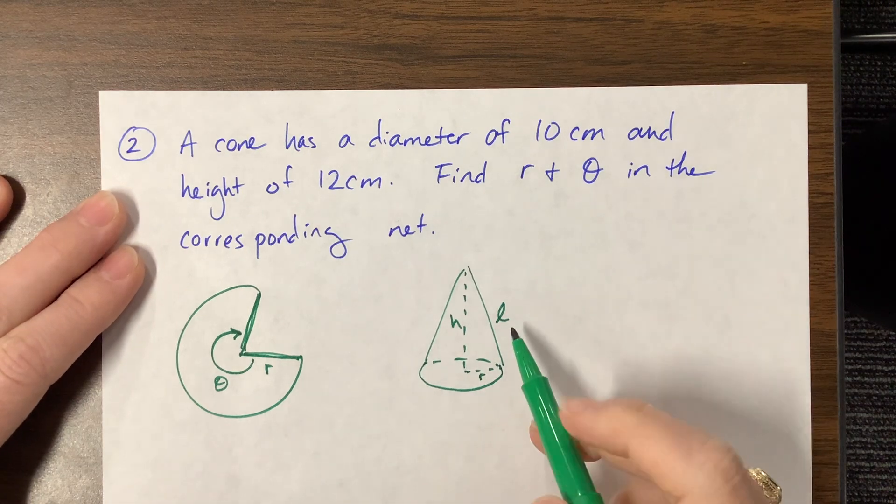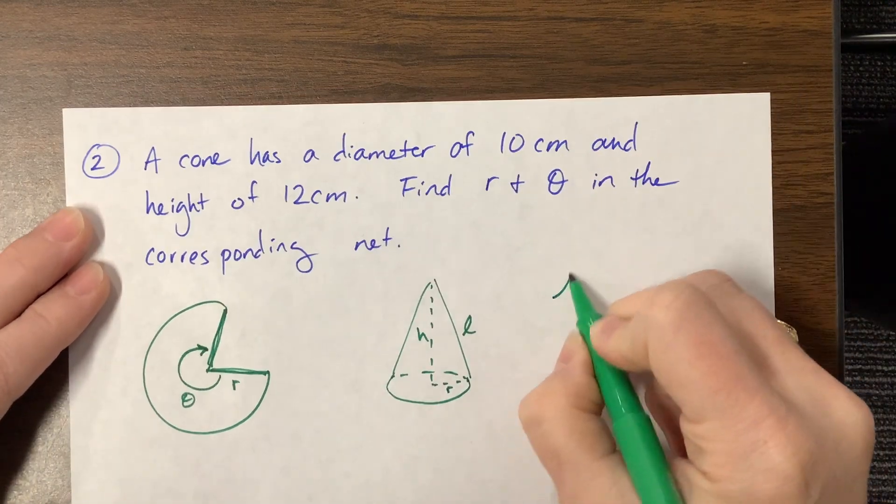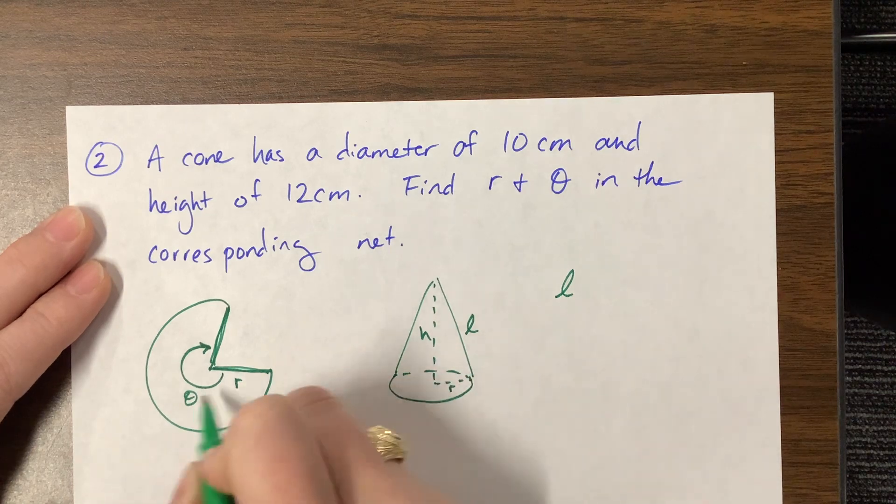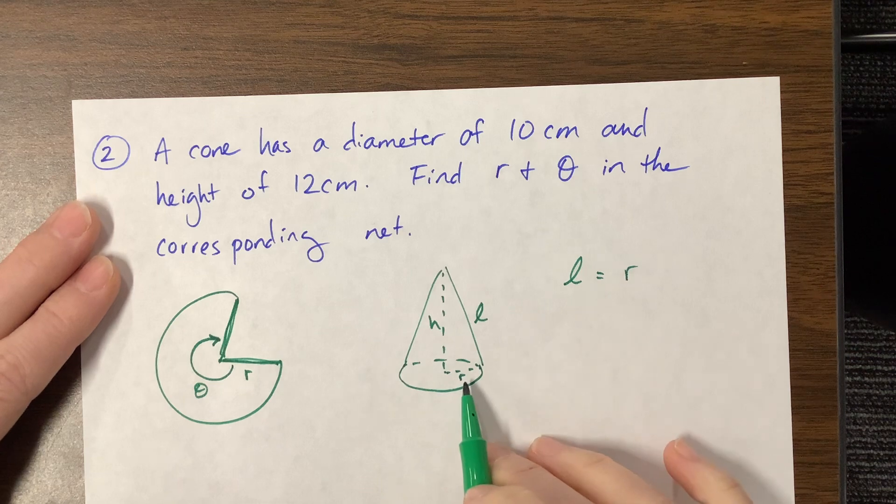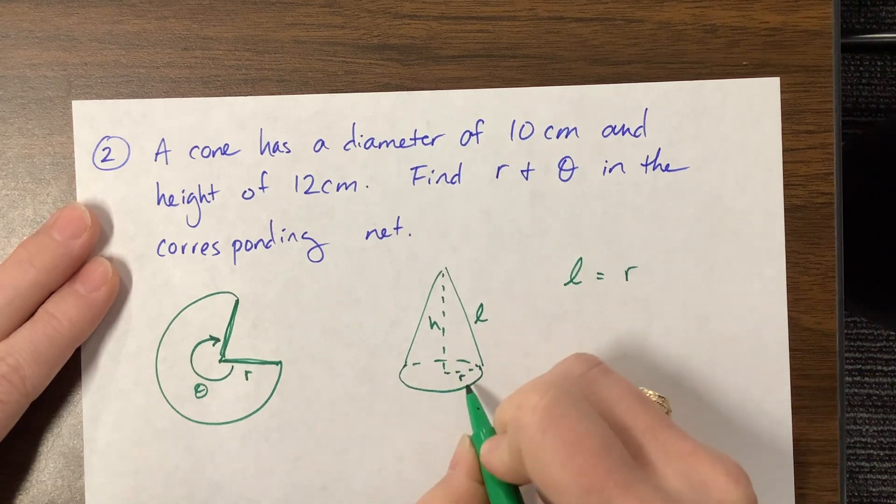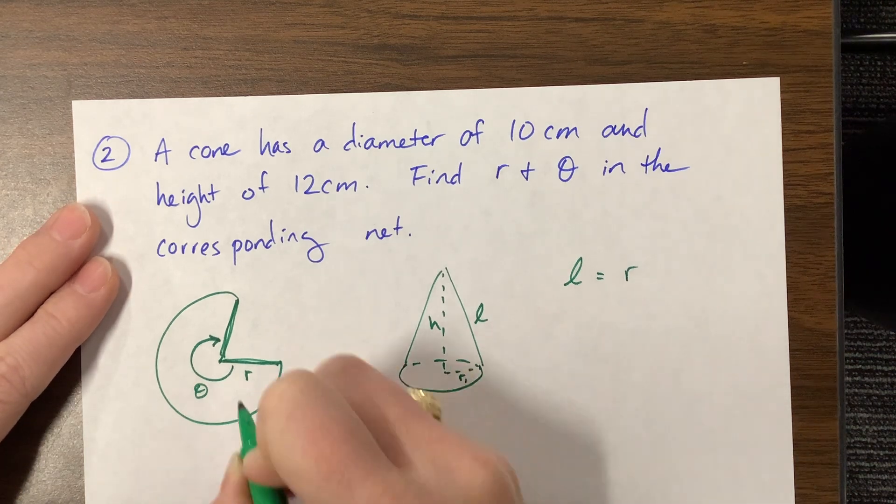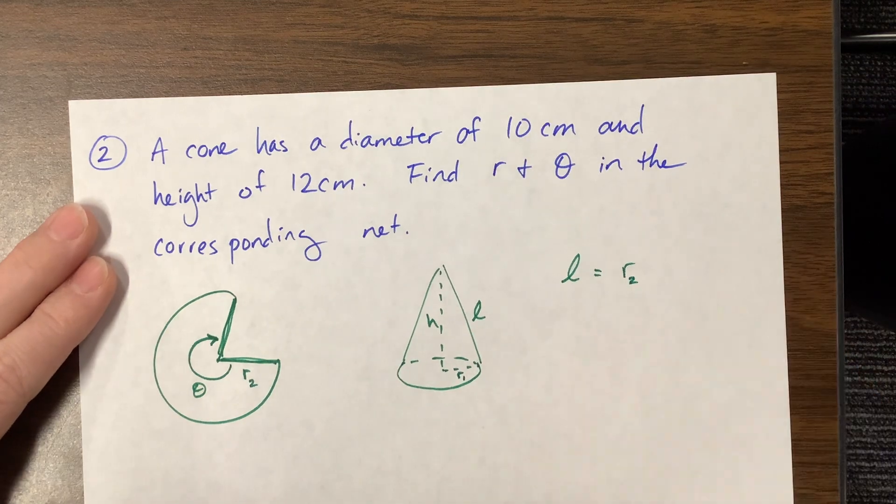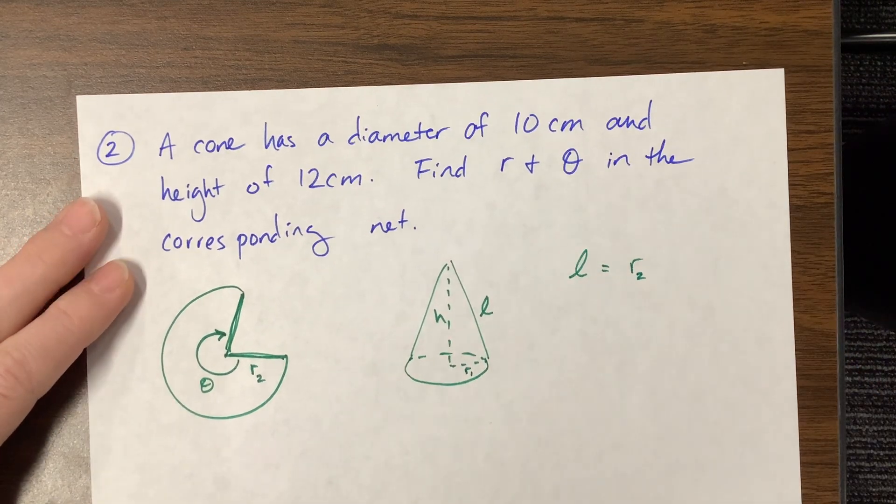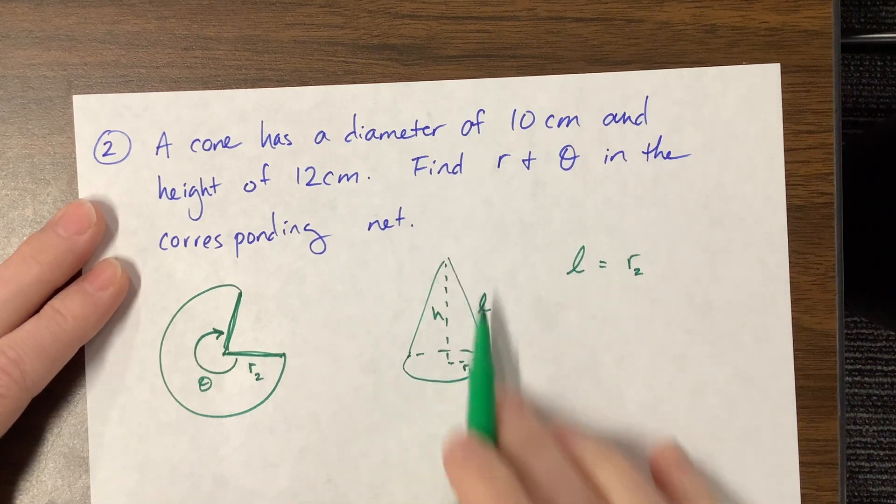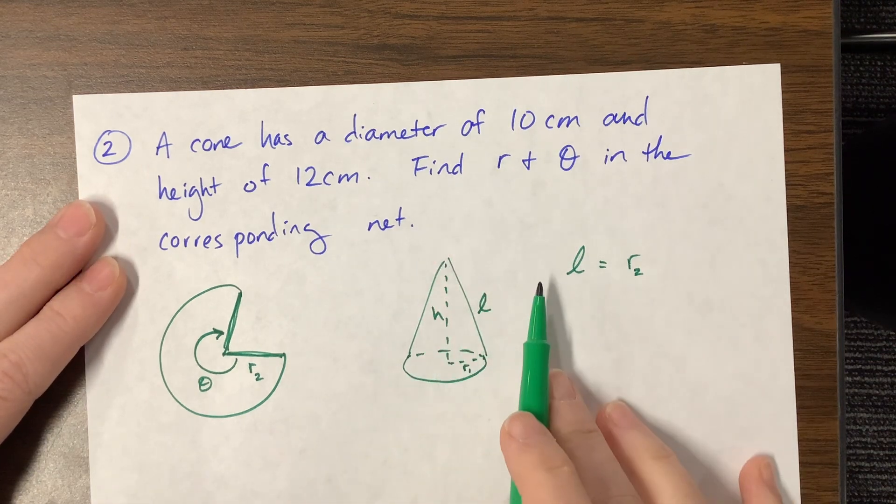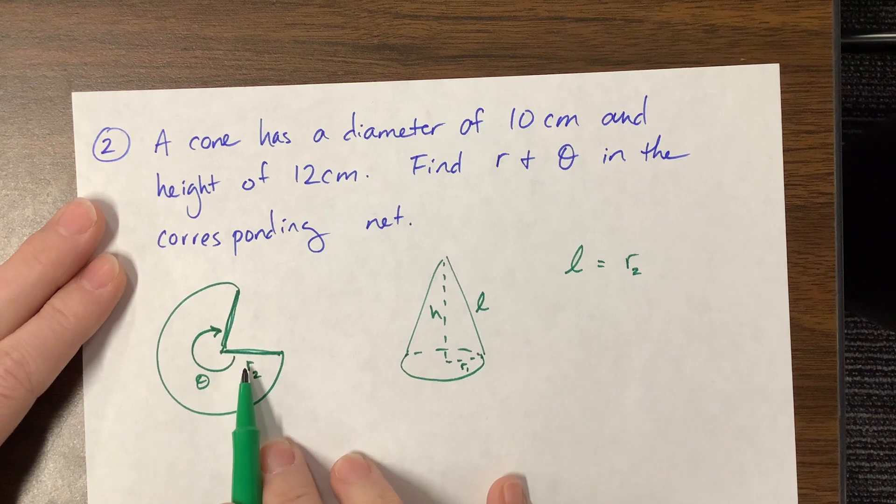So what we know is that the slant height, so the slant height of the cone is going to be equal to the radius of the sector. And what we know is that, you know what, we should call this R1 and call this R2. Because I have R, I don't want to have those show up. The height right here, I see a right triangle.